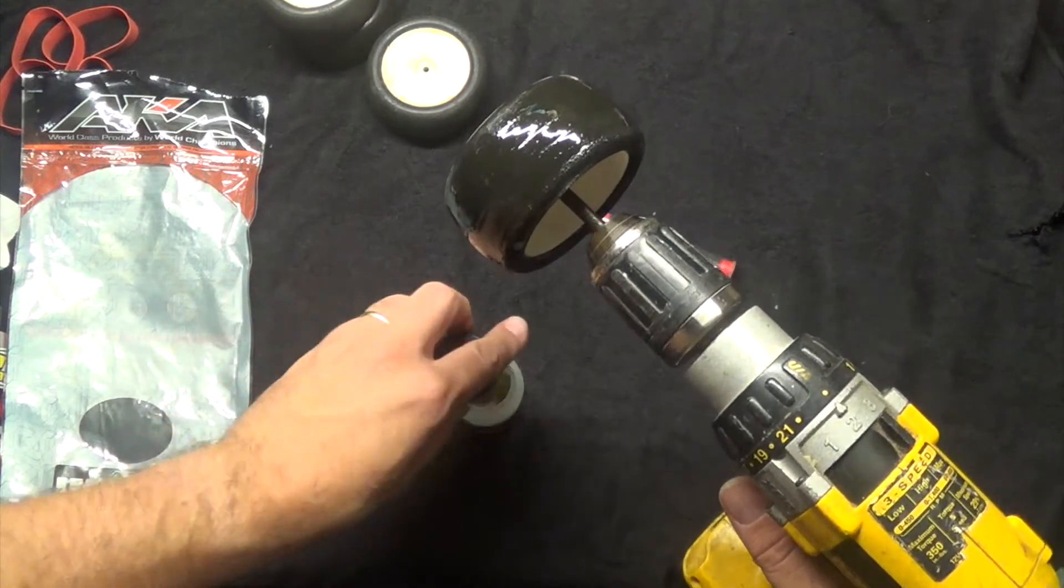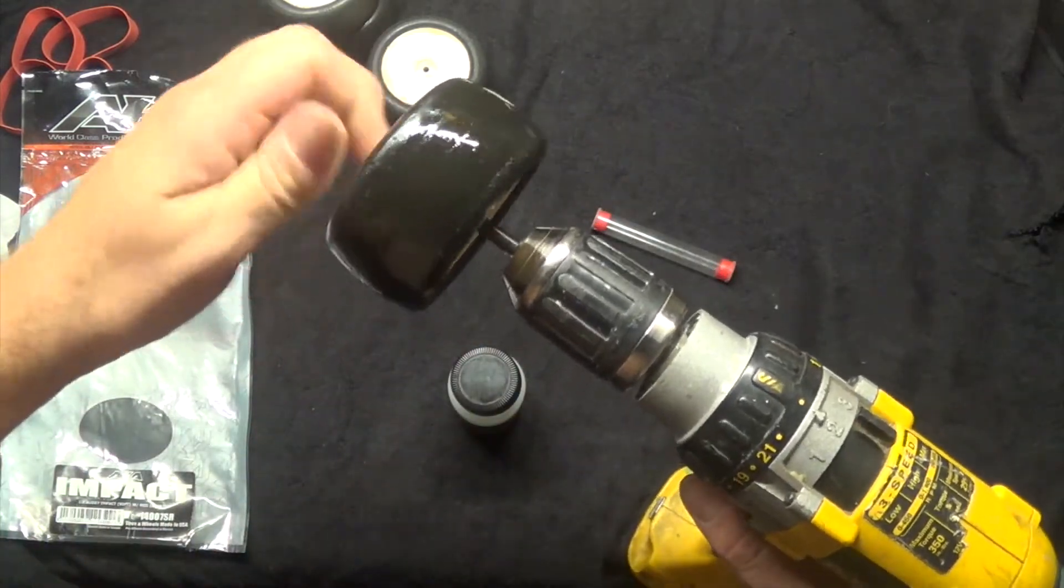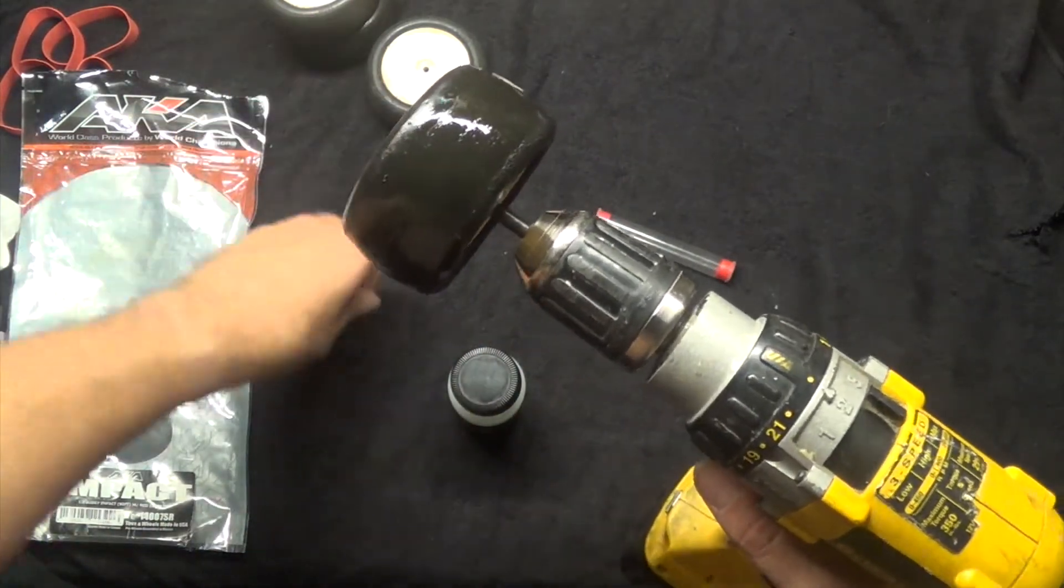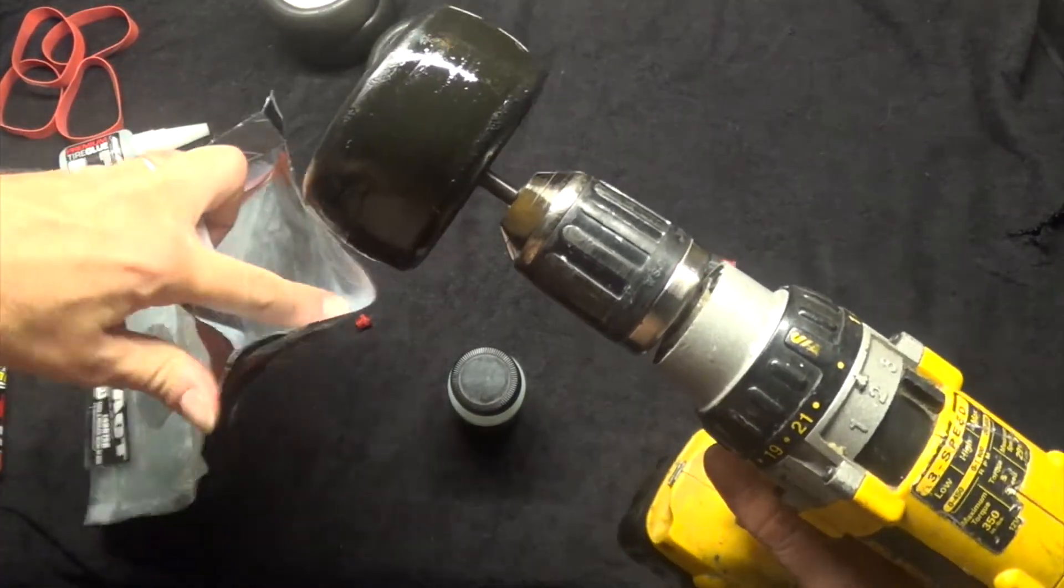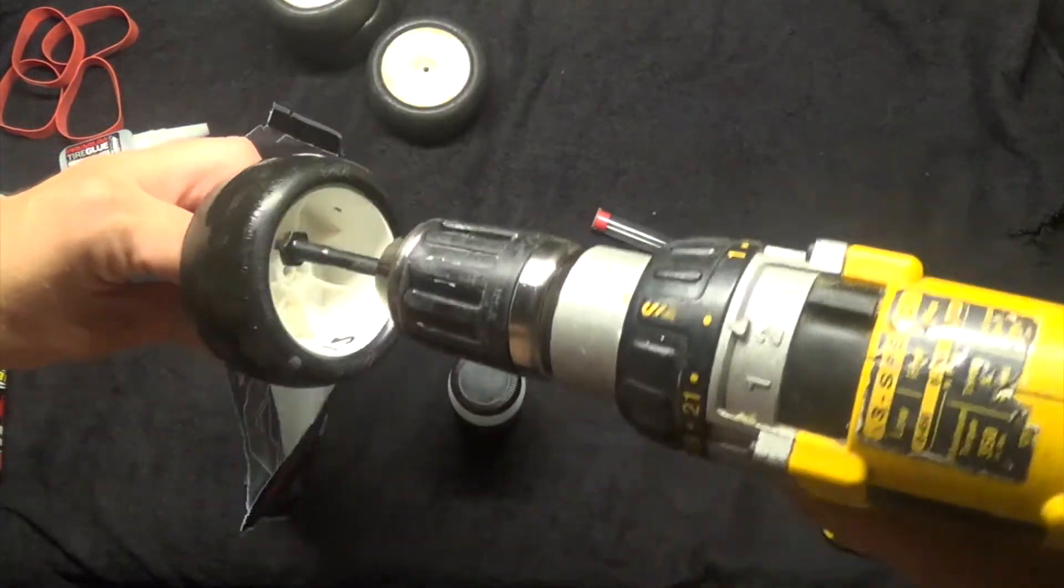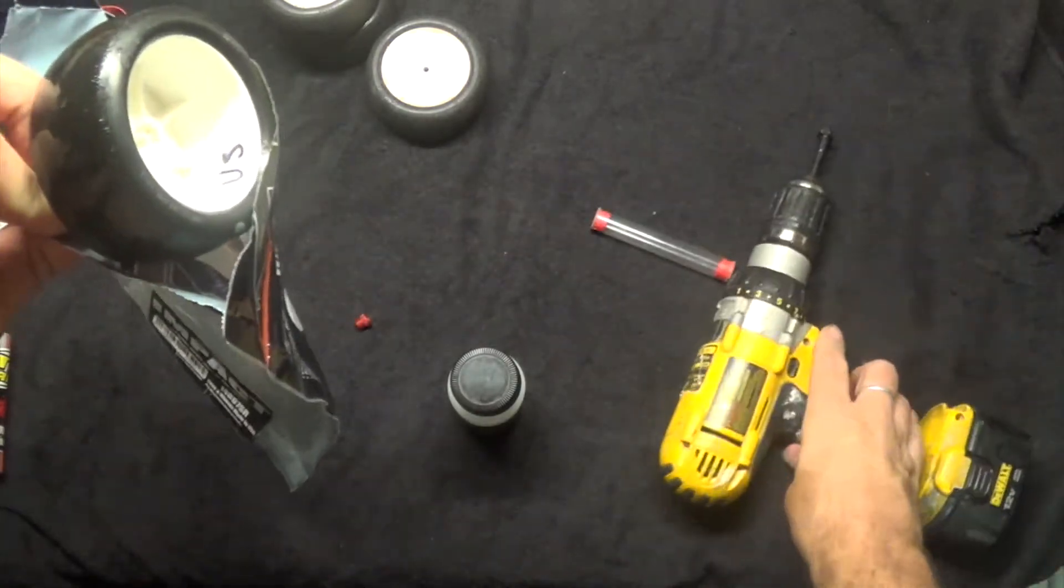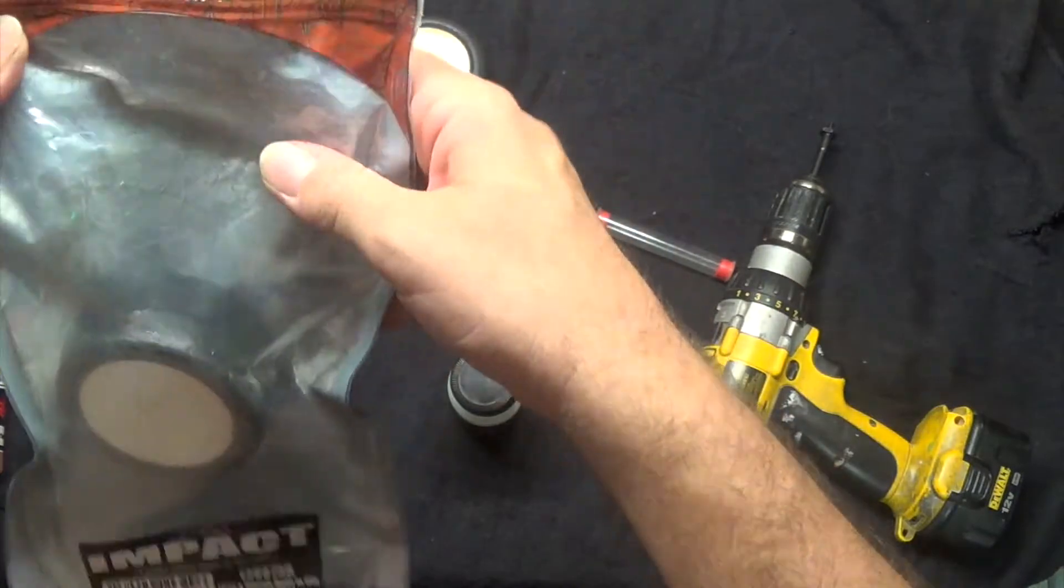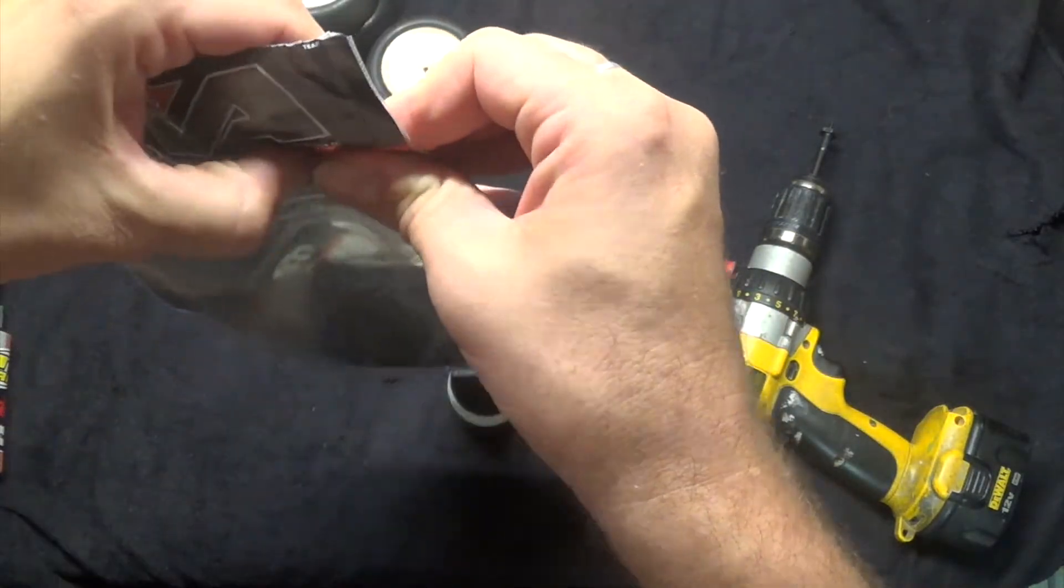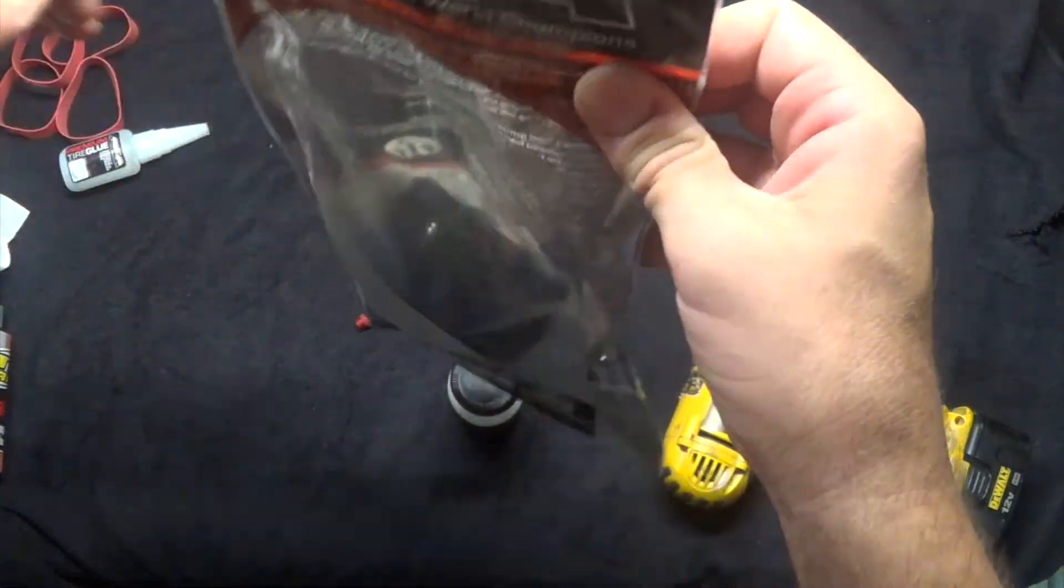All right, and then basically I'm going to drop that in this bag. It's a great way to reuse your 8-scale tire bag, or any bag you have. Drop that in there, let that soak overnight, do it with both tires, and seal that up and let it sit, and then basically repeat the process.